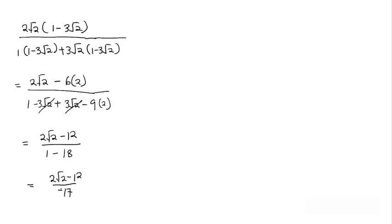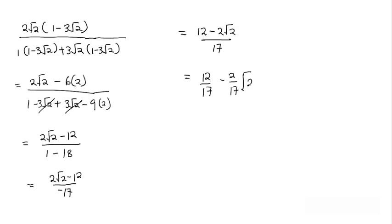From here, if I multiply through by negative to rearrange, the 12 which is negative will come first as positive, then minus 2 root 2, and the negative at the bottom goes away to give 17. So this can be rewritten as 12 over 17 minus 2 over 17 root 2. This becomes our answer for the expression we had to simplify.